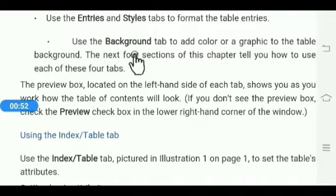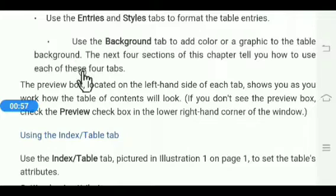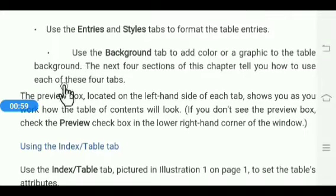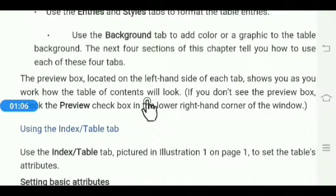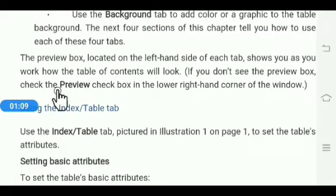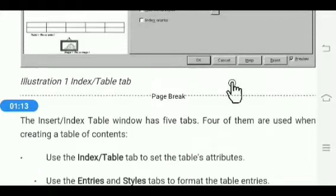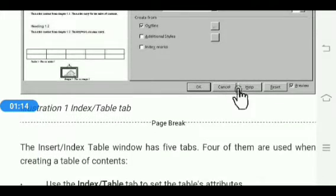Use the Background tab to add colors or graphics to the table background. The next four sections tell you how to use each of these four tabs. For preview, the preview box located on the left side of each tab shows you how the table of contents will look. Check the preview check box in the lower right-hand corner of the window — this is the preview button.